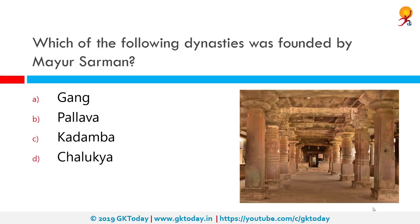Which of the following dynasties was founded by Mayur Sharma? The correct answer is Kadamba. The Kadambas were an ancient royal family of Karnataka that ruled northern Karnataka and the Konkan from Banavasi in present-day Uttara Kannada district. The kingdom was founded by Mayur Sharma around 345 CE and later showed potential for imperial proportions, maintaining marital relations with the Vakatakas and the Guptas of northern India.